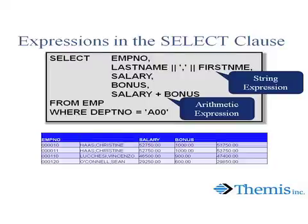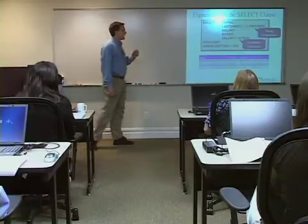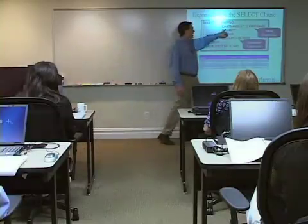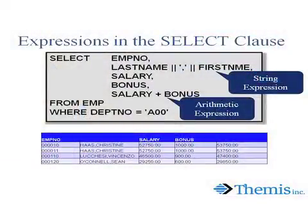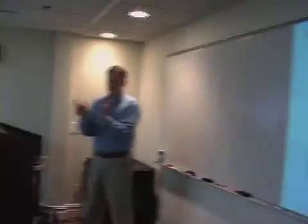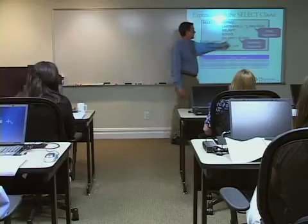But we also have some things that are a little bit more complex than just regular columns off the table. In this example we've got last name, concat, concat, first name. So what we're doing is taking things out of two columns on the table and crunching them together, concatenating them together into one column in the result set.